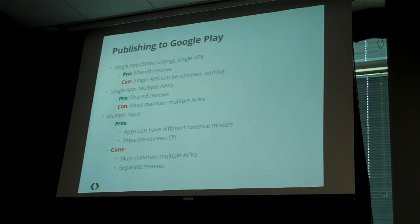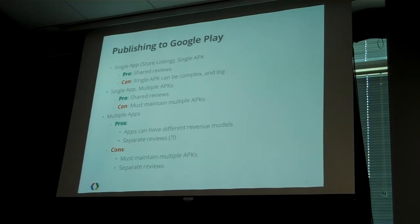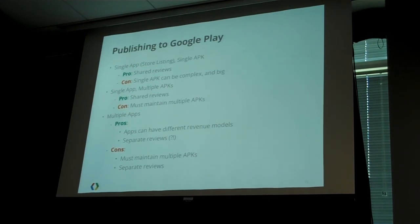Alternatively, you can have a single app listing in the store with multiple APKs. You still get shared reviews — when a user rates the application it goes at the application level, not the APK level. The downside is that you have to maintain multiple APKs — even though your handheld version and Google TV version do essentially the same thing, you'll have to compile two separate APKs and maintain them separately in Google Play Store. But you get the benefit of two streamlined APKs targeted for different classes of devices.